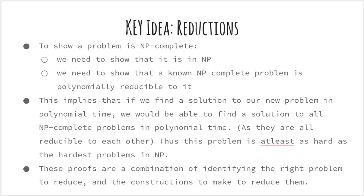Why do we choose only one problem to reduce? Because if we are able to prove that one problem is reducible to our problem, then every other problem in the class of NP-complete is reducible to that problem in polynomial time. By extension, we have shown that our problem is at least as hard as any of the NP-complete problems.